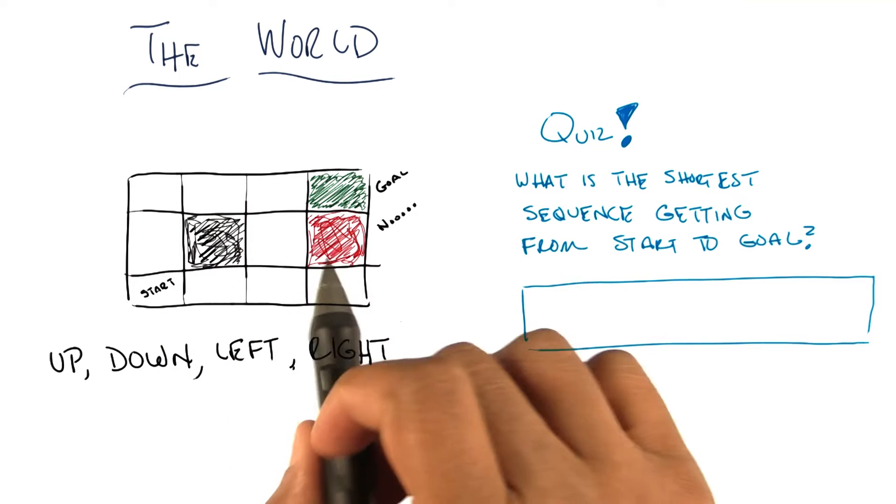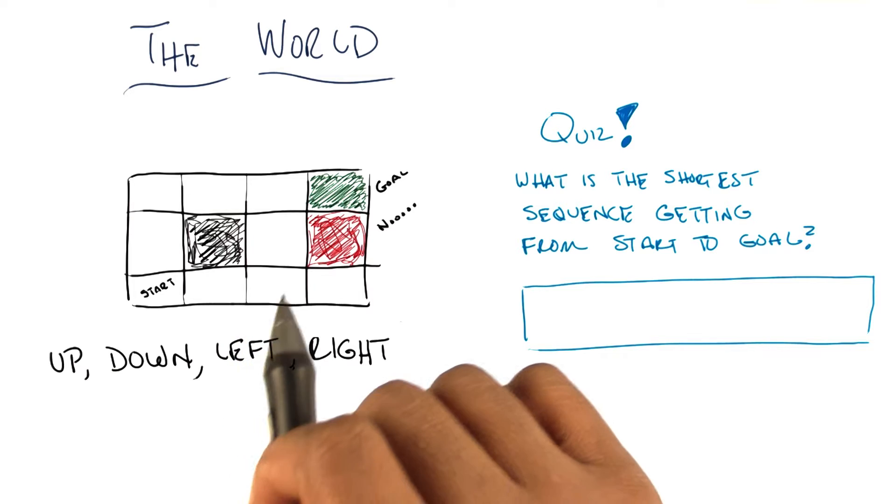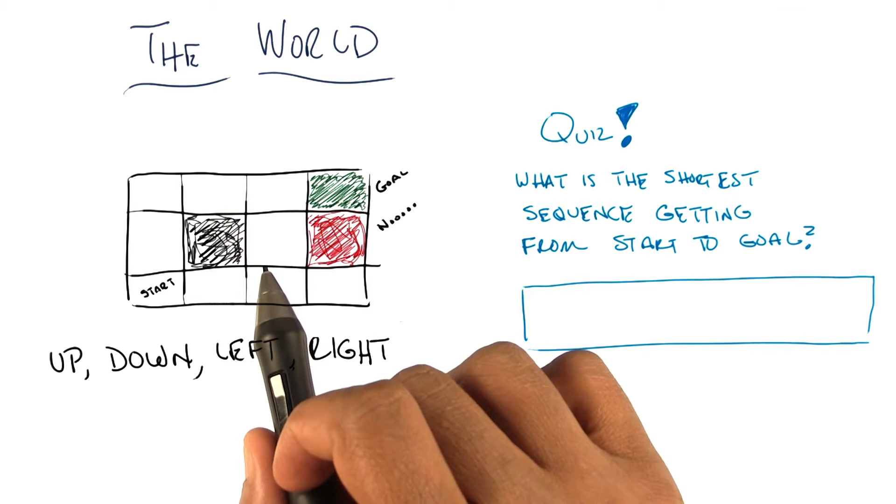Now this is called a grid world, which is something that people in reinforcement learning love to think about. Because it's a nice approximation for all the complexity of the entire universe.